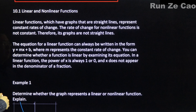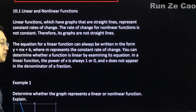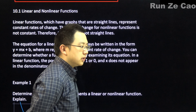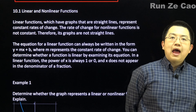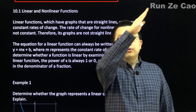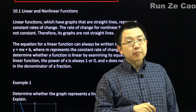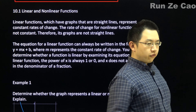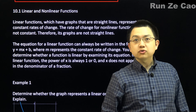A nonlinear function's rate of change is not constant. So the graphs are not straight lines — you don't have a constant slope. The steepness is not the same. Therefore, the line can fluctuate.